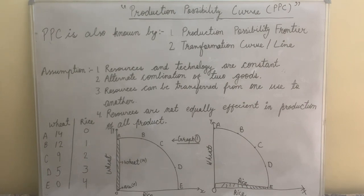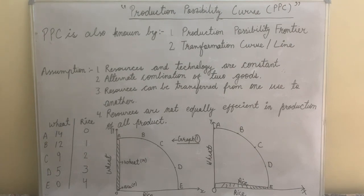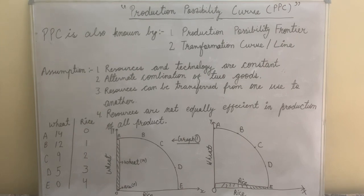Fourth, resources are not equally efficient in the production of all goods. The land is more capable of producing wheat than rice. So we have to allocate resources in a way that we can grow rice as well, by sacrificing wheat in correspondence to increasing rice production.